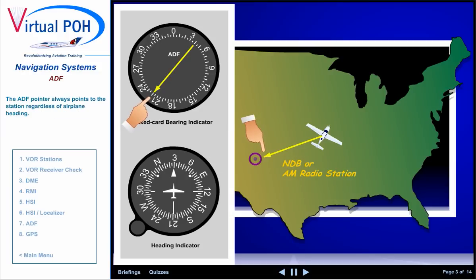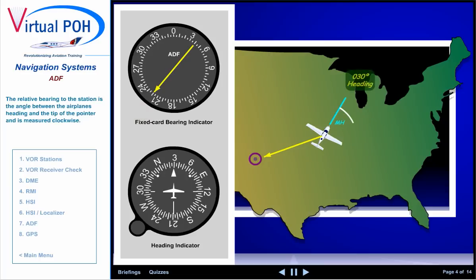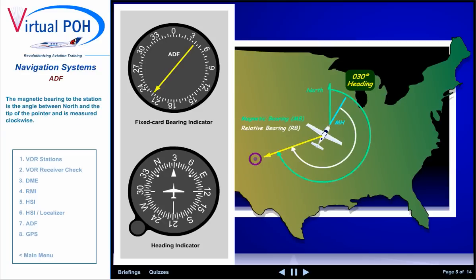The ADF pointer always points to the station regardless of the airplane heading. The relative bearing to the station is the angle between the airplane's heading and the tip of the pointer, and is measured clockwise. The magnetic bearing to the station is the angle between north and the tip of the pointer, and is measured clockwise.